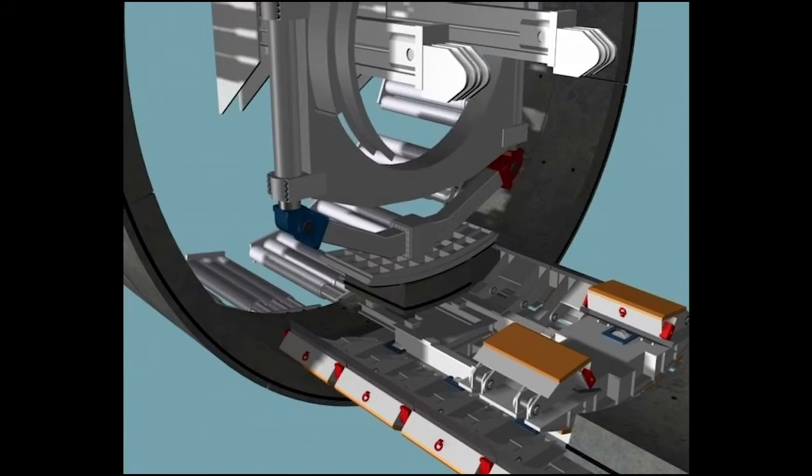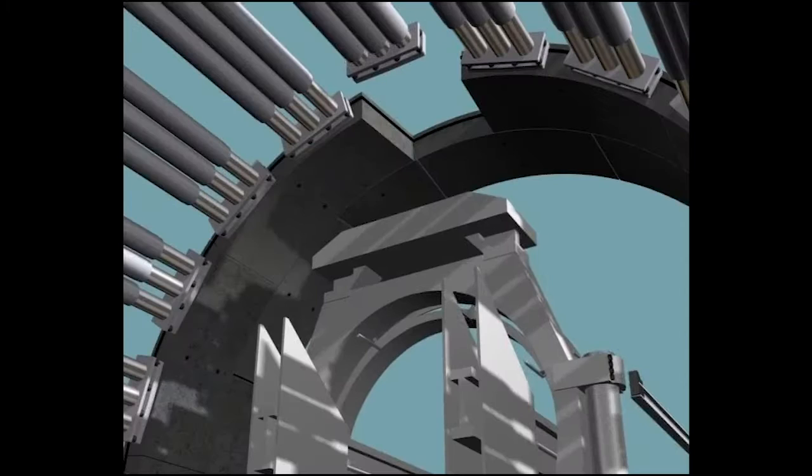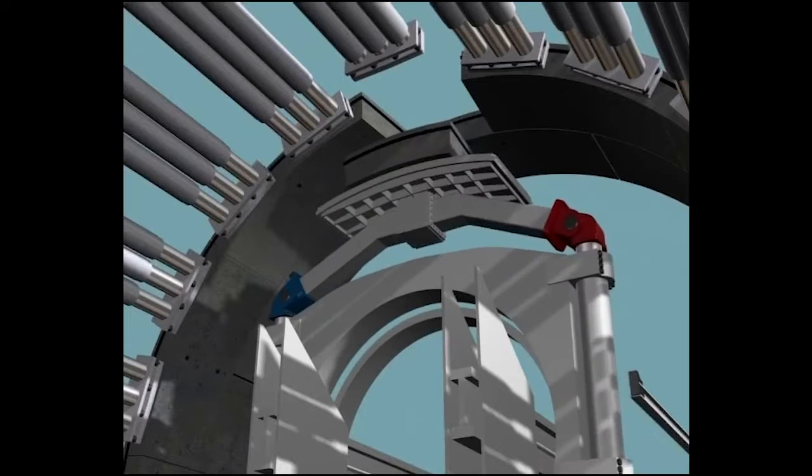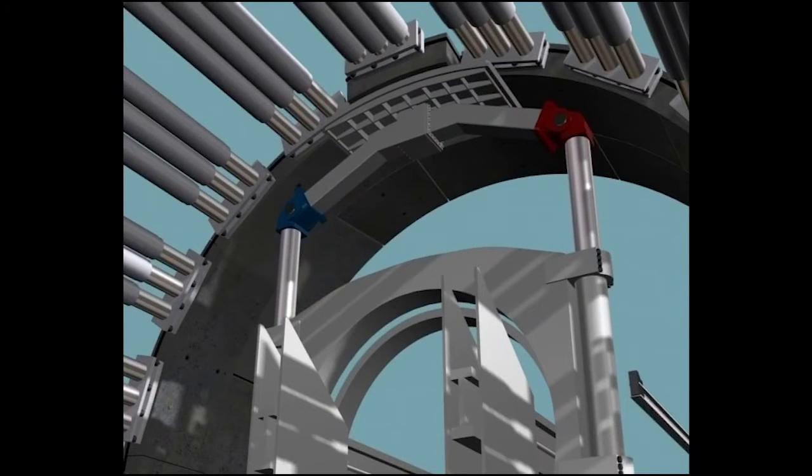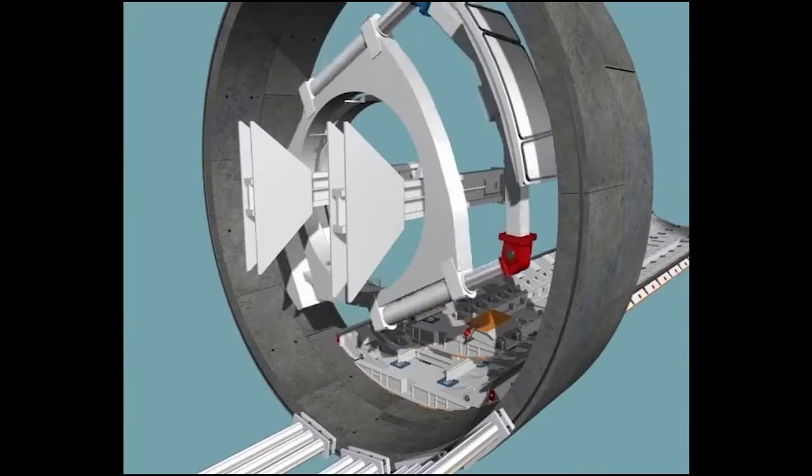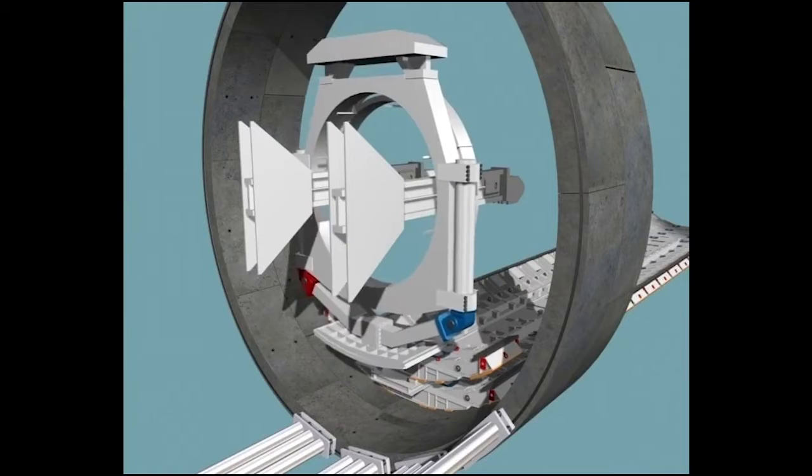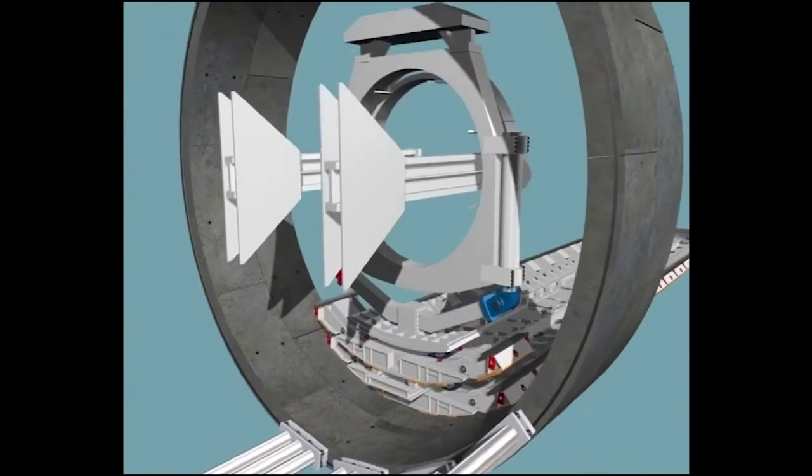After that, the segments can be bolted. The conical keystone is inserted from the front. At the end of this process, a so-called invert slab, which is a tiltable module, is installed in the invert of the last built ring.